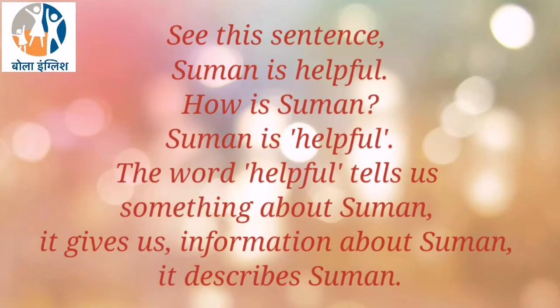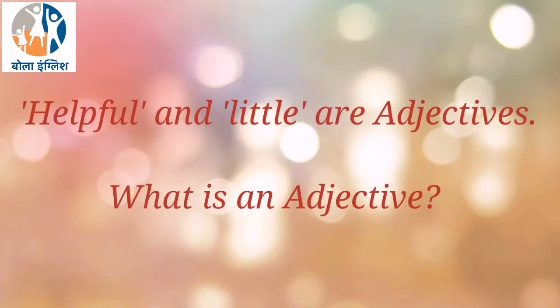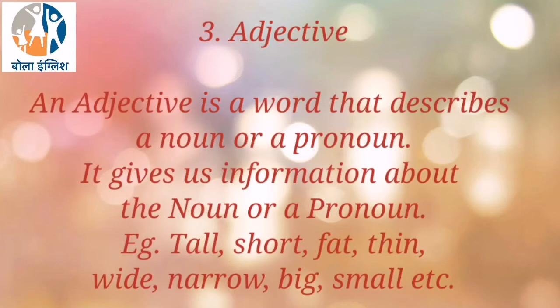See this sentence: 'Suman is helpful.' The word 'helpful' tells us something about Suman — it gives us information about Suman and describes her. Similarly, 'Shreya hugged her little daughter.' The word 'little' gives us some information about Shreya's daughter and describes her. Helpful and little are adjectives. What is an adjective?